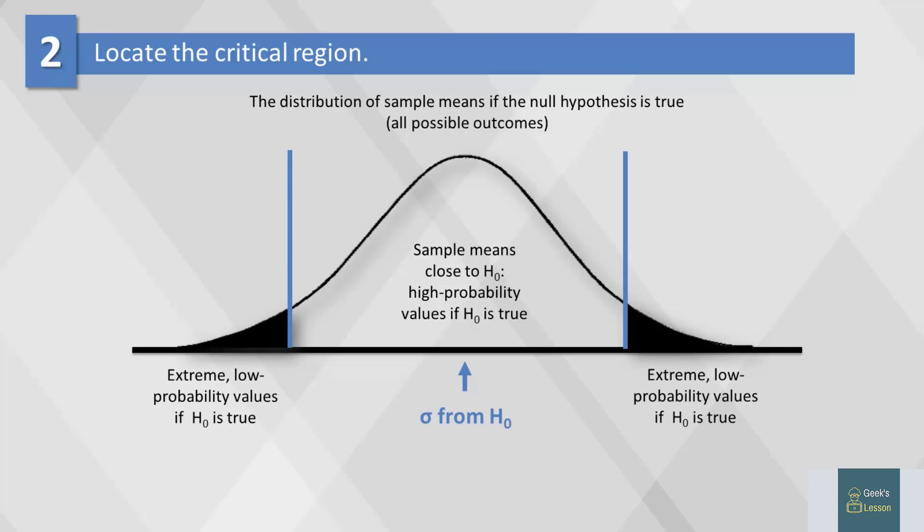If we decide that we want to measure the mean with a 90% precision level, then the shaded area on the left and right will be larger. If we want to measure with a 1% precision, then the area will be smaller and the range will be larger.